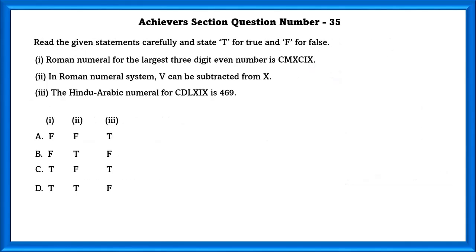Achievers Section Question Number 35. Read the given statements carefully and state T for true and F for false. Statement I: Roman numeral for the largest three digit even number is CMXCIX. This is wrong. The largest three digit even number is 998, and its Roman numeral form is CMXCVIII.